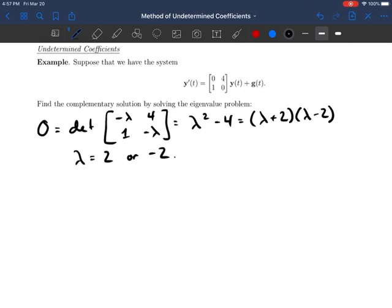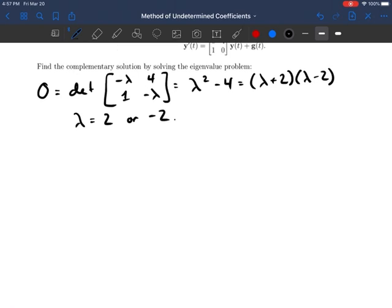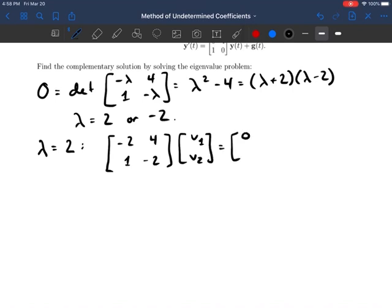All right, with each of those eigenvalues, we need to find a corresponding eigenvector. So let's begin with lambda equals 2. So we're looking for a vector for which A minus lambda I, so [-2, 4; 1, -2], times [v1; v2] equals [0; 0]. I think we've got enough practice at this point that we can go pretty much straight to what this is going to be. If we select [2; 1], then that will get the job done.